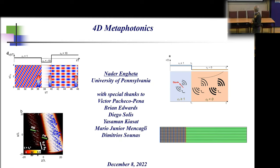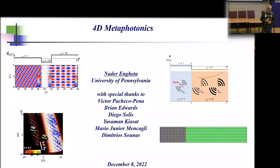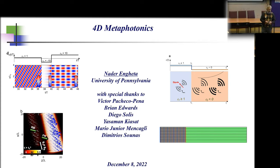As you can see from the title of my talk, I want to give an overview of one of the areas of research in my group, which deals with four-dimensional metamaterials. What do I mean by four-dimensional metamaterials? These are structures that we use to manipulate waves by structuring the material parameters not only as a function of space but also as a function of time. This gives us additional degrees of freedom.